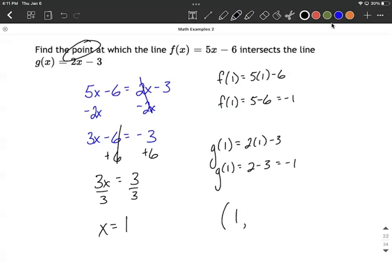g of 1 is going to be 2 minus 3, which also makes negative 1, which should make sense. So we had an x value of 1, and that y value of negative 1 is what was output. You don't have to plug into both functions, but if you want to double check your answer, you certainly could. So that's our point of intersection: 1, negative 1. Hope this helps. Good luck.